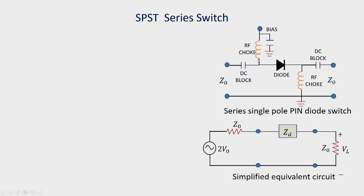This choke will prevent flow of signal towards the bias source. We also have DC blocks here because the DC voltage should not go to either the source or the load. The N side of the diode is grounded through another RF choke, which will prevent the signal from going to ground. When this switch is on, or the diode is in a low impedance state, signal will flow from the source towards the load.